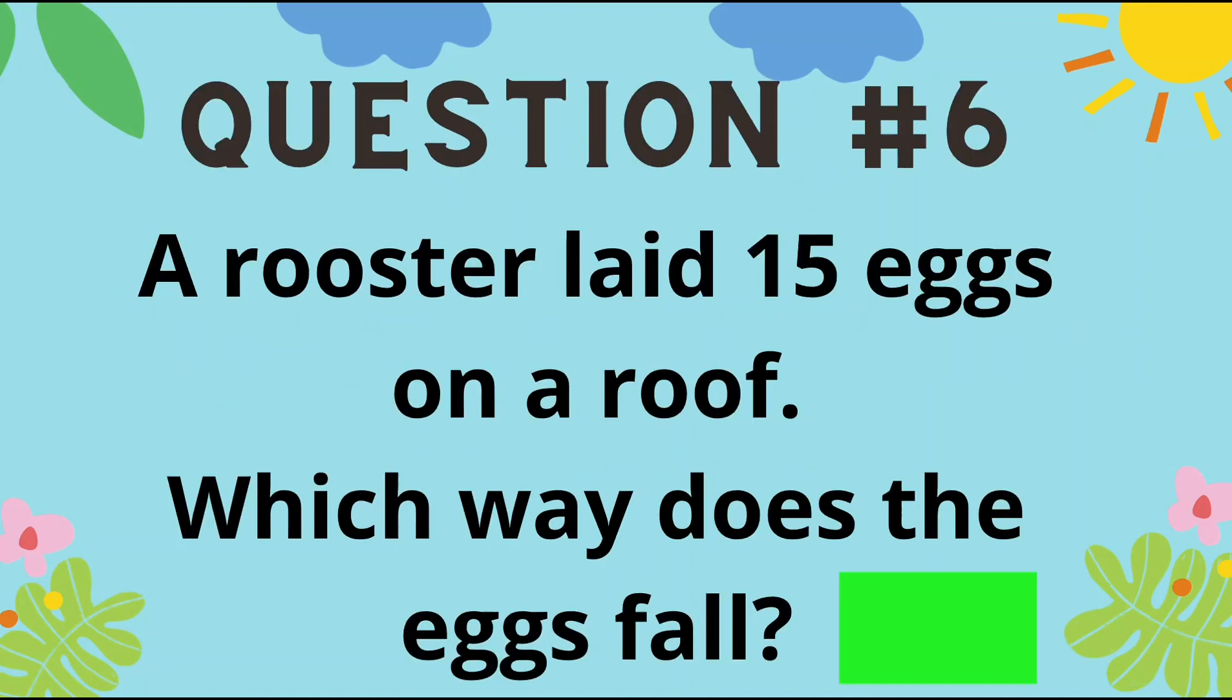Question number 6. A rooster laid 15 eggs on a roof. Which way does the eggs fall? Go!